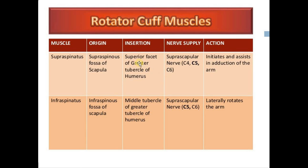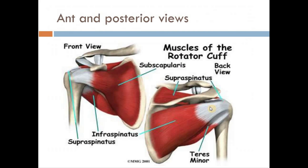The supraspinatus inserts at the superior facet of the greater tubercle of the humerus, and the infraspinatus inserts at the middle facet of the greater tubercle of the humerus. Both are inserting at the greater tubercle.